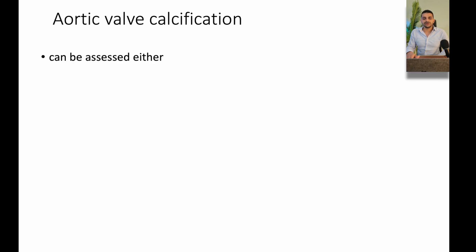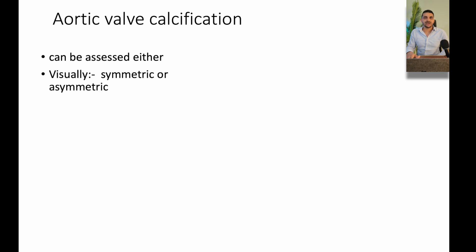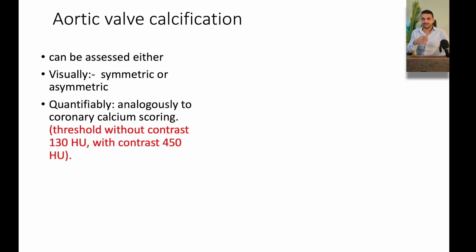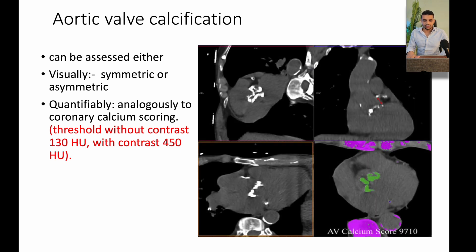Aortic valve calcification is important and will be discussed in more detail later in the presentation. There are two main ways to assess it: first, visually — you assess whether the calcification is symmetrical or not; and second, quantitatively using the Agatston score. For example, this patient shown here has a calcium score of 9,710.